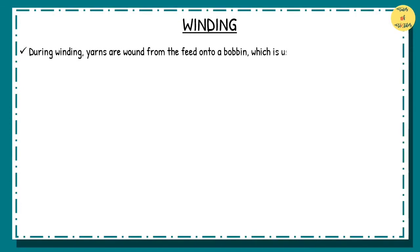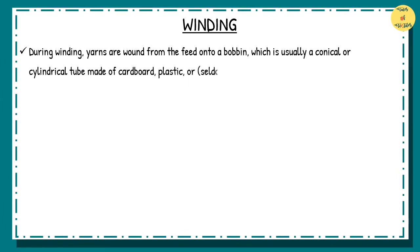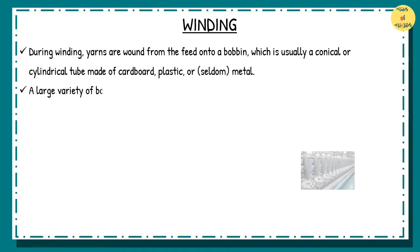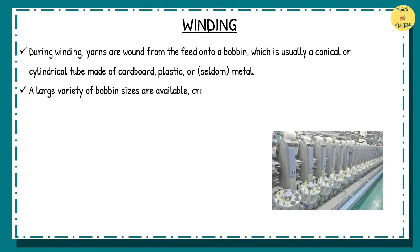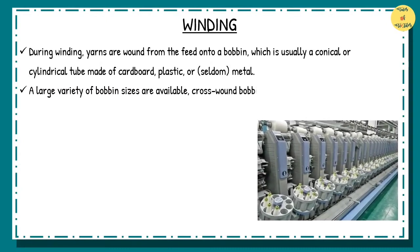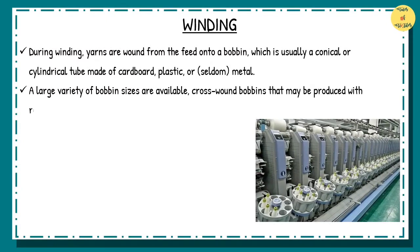which is usually a conical or cylindrical tube made of cardboard, plastic, or, seldom, metal. A large variety of bobbin sizes are available; cross-wound bobbins that may be produced with random winding or precision winding are the most commonly used.